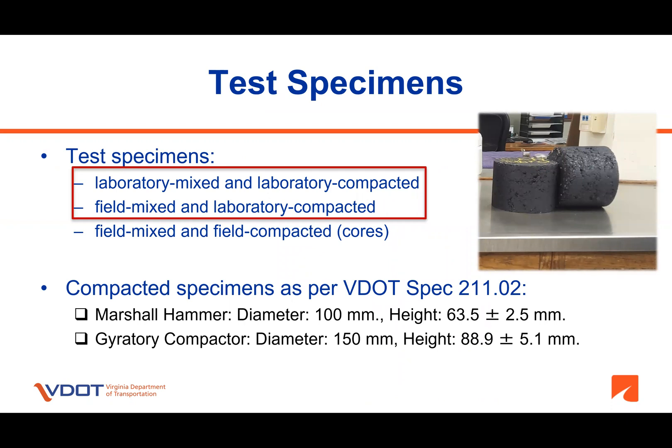This method can be used to test asphalt mixtures in conjunction with mixture design testing, asphalt mixture produced at mixing plants, and asphalt mixture cores obtained from completed pavements of any age. Please note that testing field cores is not part of VDOT SPEC requirements. As per VDOT SPEC 211, specimens shall be compacted to 7 ± 0.5% air void content with a height of 63.5 ± 2.5 mm and a diameter of 100 mm if specimens are compacted using a Marshall hammer. If a Superpave gyratory compactor is used, then a specimen height of 88.9 ± 5.1 mm and a diameter of 100 mm is required.